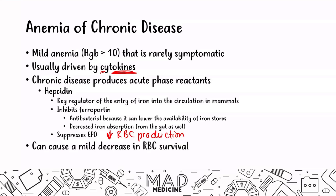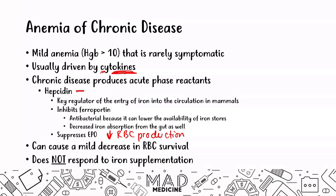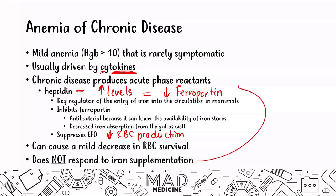This mild anemia is supplemented by a mild decrease in red blood cell survival. Importantly, if you give iron to patients with anemia of chronic disease, they are not going to respond. The reason is that hepcidin levels are higher, causing decreased ferroportin activity, so any iron given will not even be absorbed in the body to begin with.